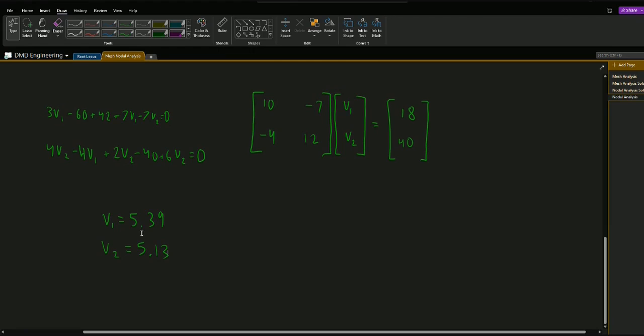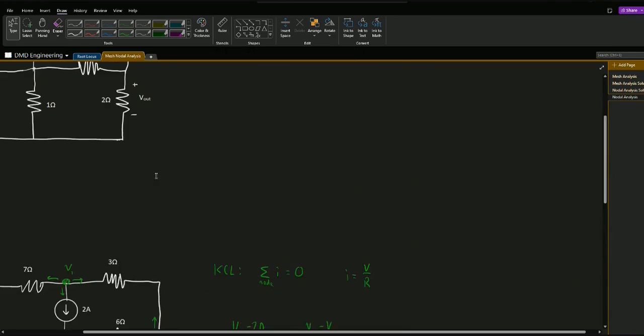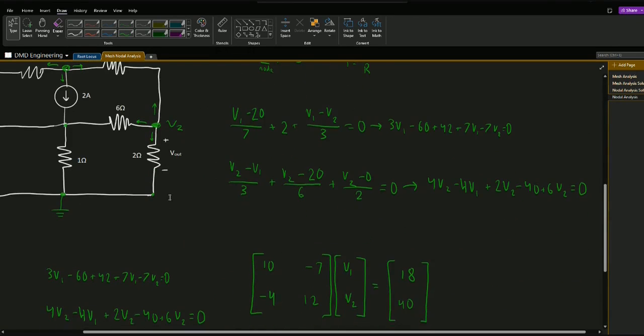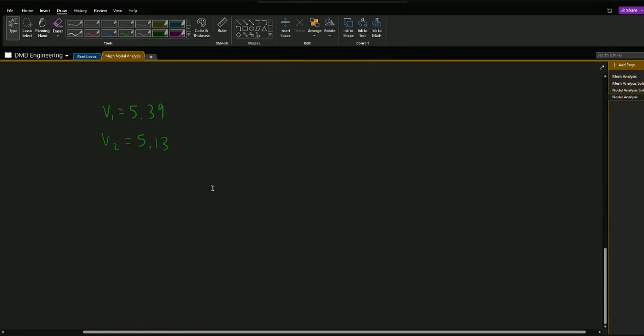This is good and now we know the voltage at all the nodes on our circuit, but the problem asked, if we scroll back up here, find the voltage vout. Vout is the voltage across this 2 ohm resistor, and since we defined this down here as ground, this vout is just going to be the same as v2 because that's the voltage across the resistor. So we can just write vout is equal to v2, and vout is equal to 5.13 volts.